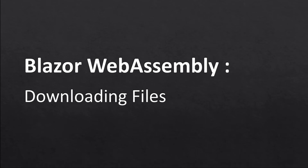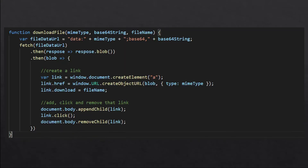In this episode I'm going to talk about how you can download files in Blazor WebAssembly applications. For downloading files we are going to take some help from JavaScript functions. We are going to create a JavaScript function in which we pass the file type, base64 string of the file, and name of the file. From the file type and base64 string we can create a file data URL which we are going to pass to our fetch API, and we'll convert the response into a blob.